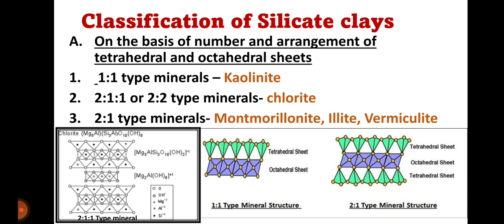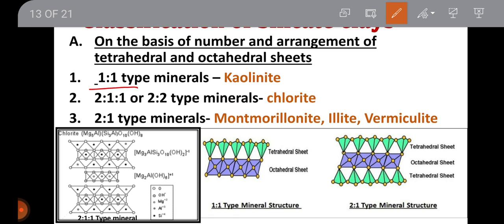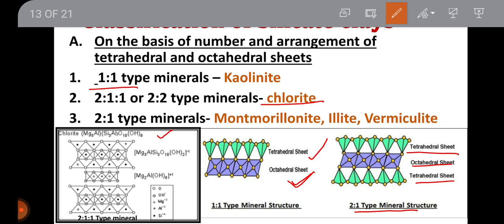The 1:1 type means one tetrahedral sheet and one octahedral sheet. The 2:1 type means two tetrahedral sheets and one octahedral sheet, where the alumina octahedral sheet is sandwiched between two tetrahedral sheets. The 2:1:1 structure is for chlorite, which has two tetrahedral sheets and one aluminium octahedral sheet.